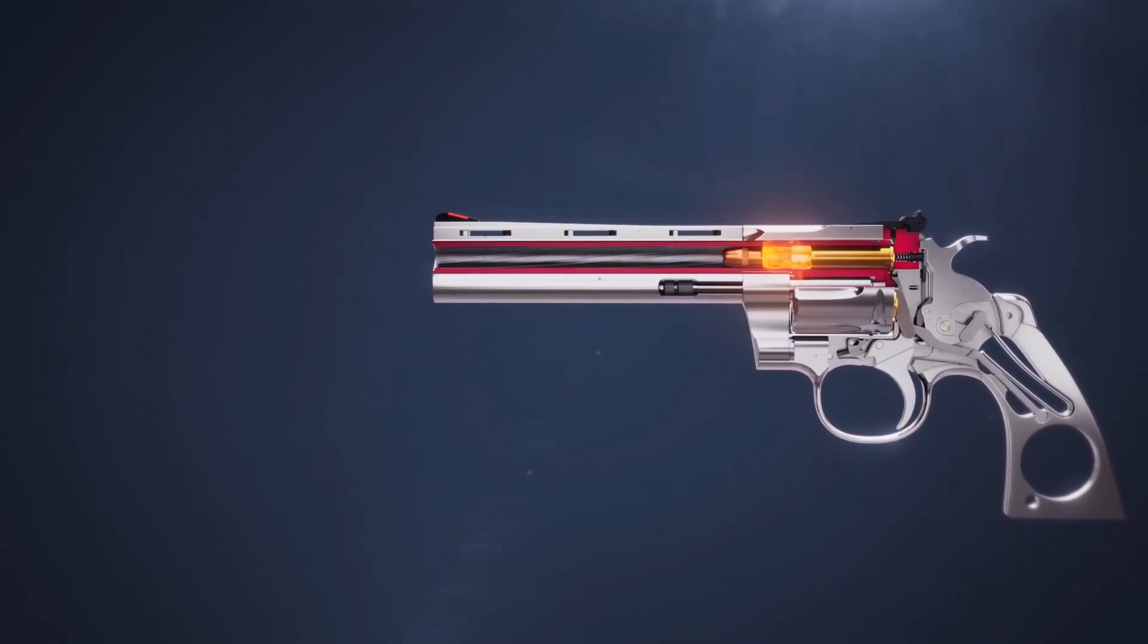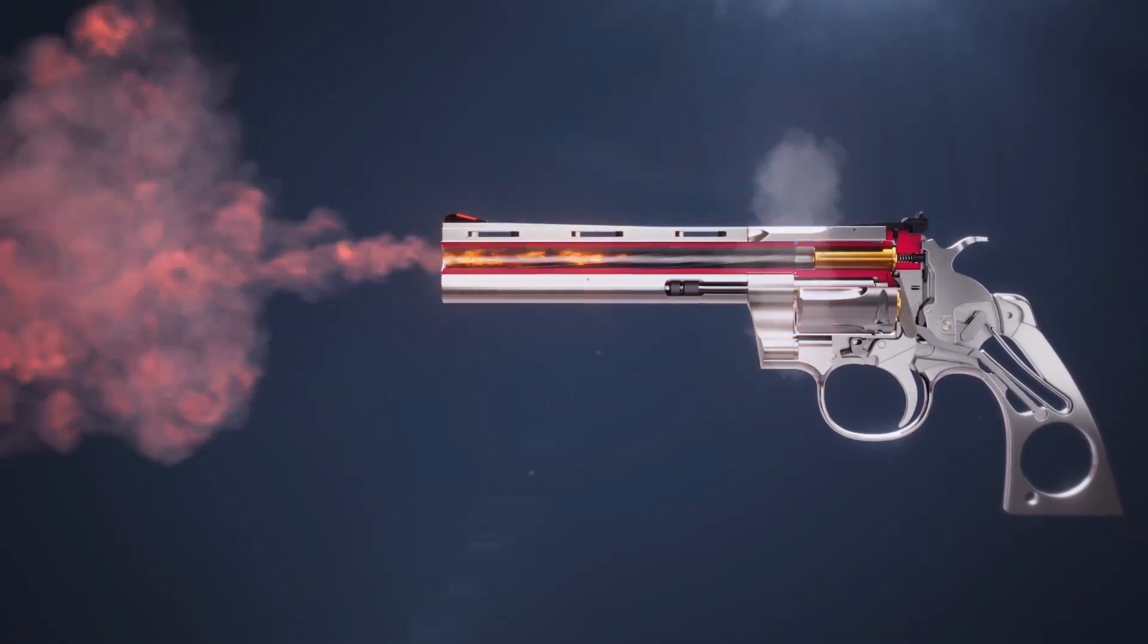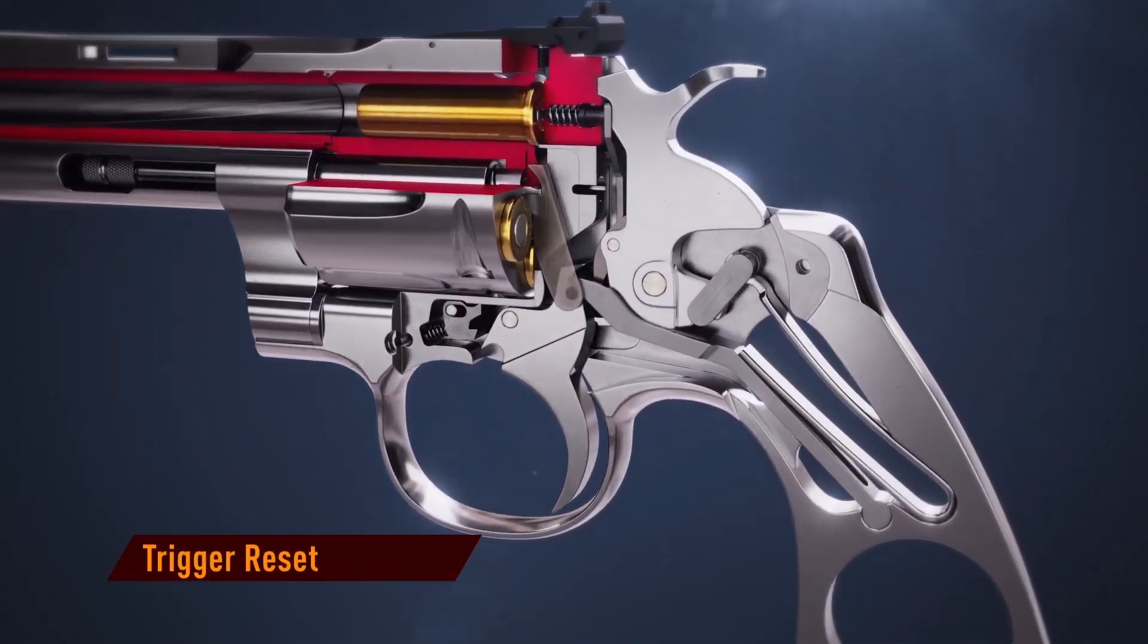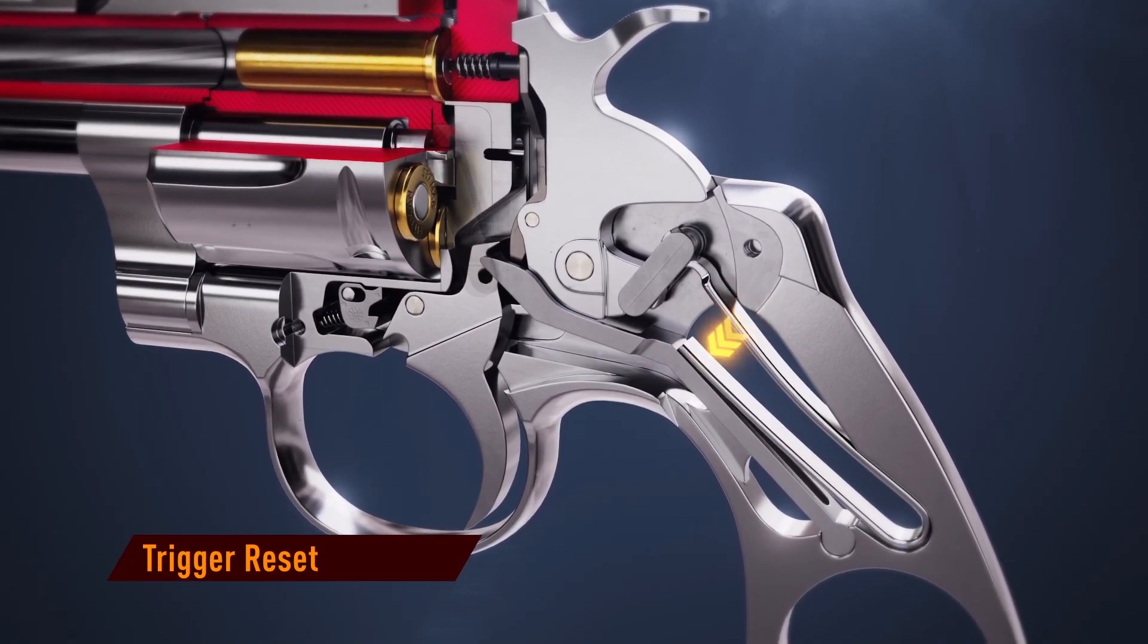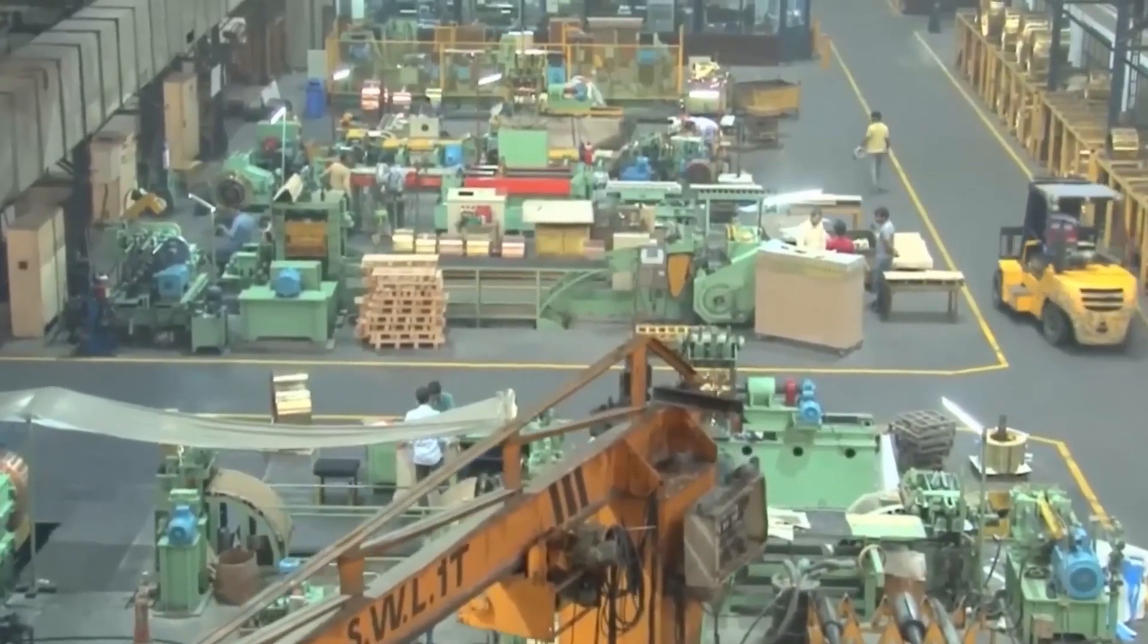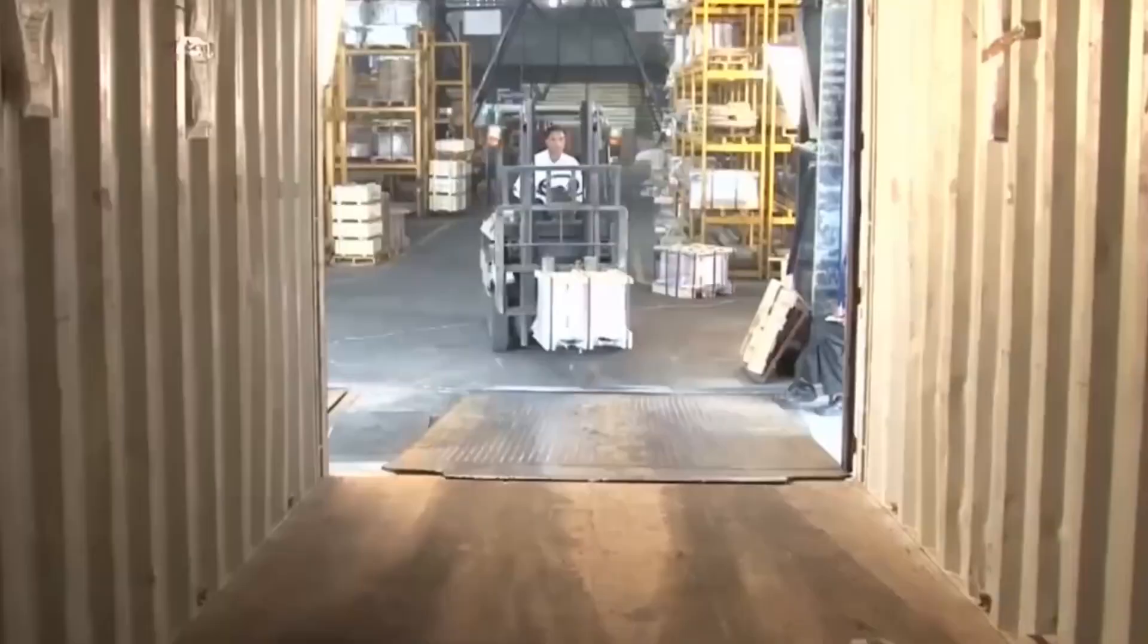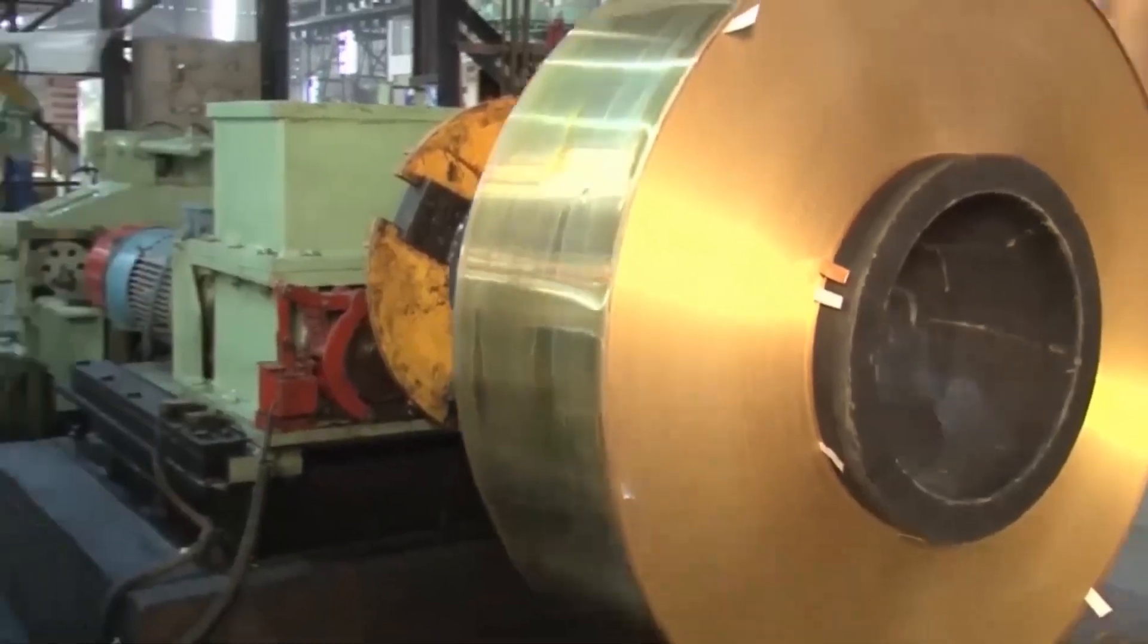The brass must expand slightly when fired to seal the chamber, then spring back enough to allow easy extraction. Major ammunition factories receive this brass in huge coils or cups, ready for forming into cases.